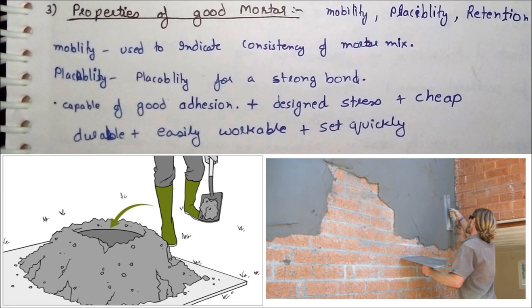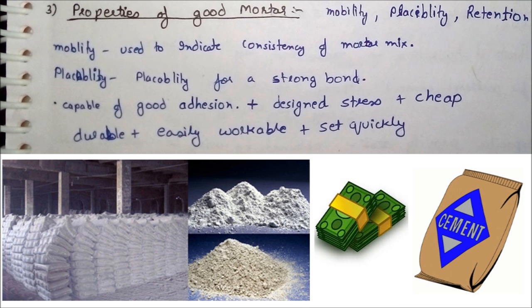The second property is placeability. We place the mortar mix such that all the shear stress and the bond between two objects is very strong. A few more properties of good mortar are: it should be cheap, take up all the design stresses, be easily workable, set quickly, and be durable.